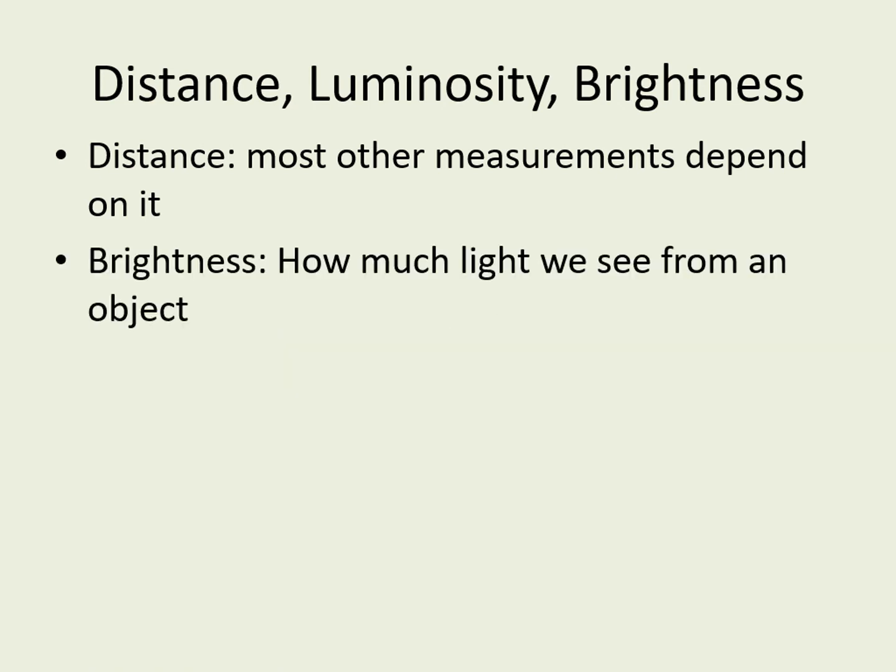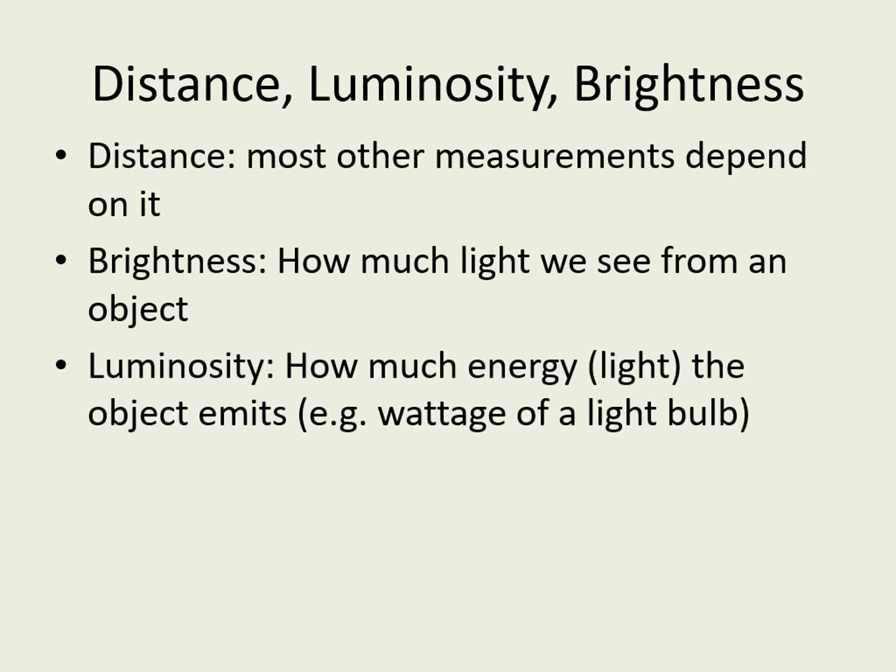Brightness is the most obvious measure of how a star looks. Brightness is how much light we see when we observe the star from here on Earth. Luminosity, on the other hand, is how much energy the star itself is actually emitting. It's measured using the unit watts, or joules per second. It's no accident that this is the same unit we use for light bulbs — in both cases, we're measuring the amount of energy being emitted as light each second.